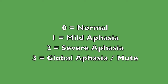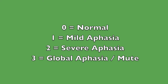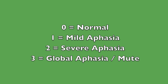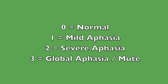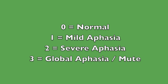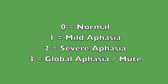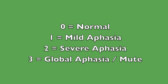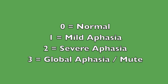As no evidence of language function can be elicited, the item is scored three. Here are the levels as shown in the doc flow sheet. If there is mild aphasia that does not profoundly interfere with normal communication, score the item one. If there is more severe aphasia that interferes with normal communication, score the item two. If the patient is globally aphasic, mute, or no evidence of language function can be elicited, score the item three. The intubated patient should be asked to write.